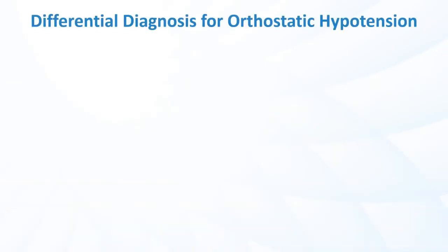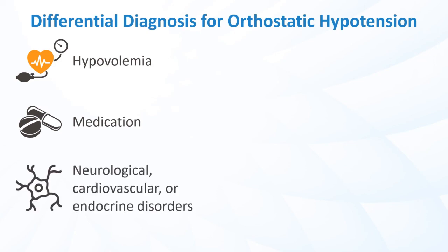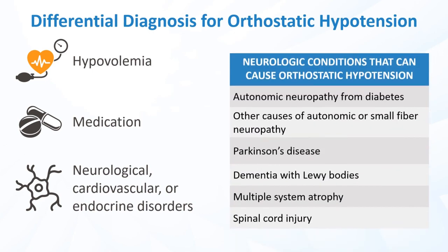Orthostatic hypotension can be caused by hypovolemia, medications like diuretics and antihypertensives, or certain underlying disorders of the neurologic, cardiovascular, or endocrine systems. Our patient's history and exam findings were suggestive of dehydration, so he received fluids in the ED and was discharged with a plan to follow up with his PCP.